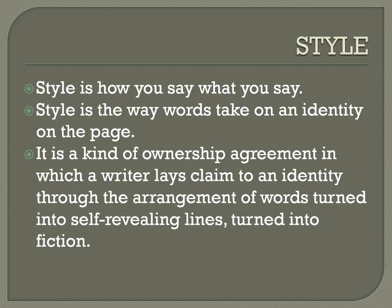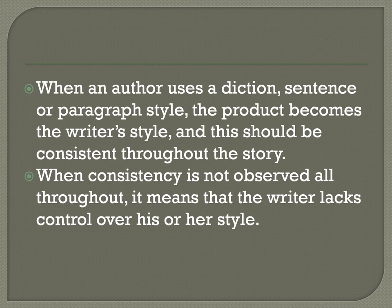The next element of fiction is style. Style is how you say what you say. Style is the way words take an identity on the page — a kind of ownership agreement in which a writer lays claim to an identity through the arrangement of words turned into self-revealing lines, turned into fiction. Every author has his or her own style, depending on the choice of words they use in their narratives. When an author uses a diction, sentence, or paragraph style, the product becomes the writer's style, and this should be consistent throughout the story. When consistency is not observed throughout, it means that the writer lacks control over his or her style.